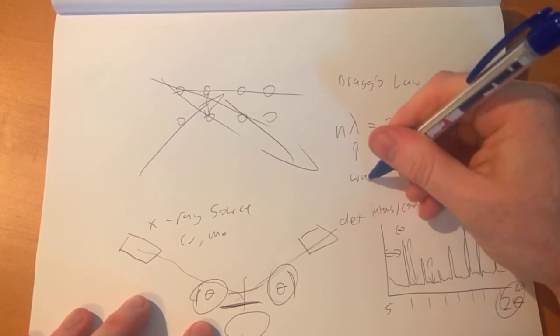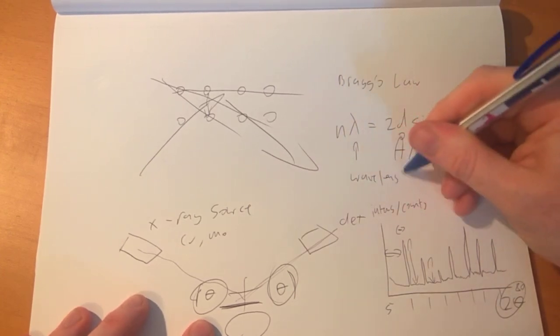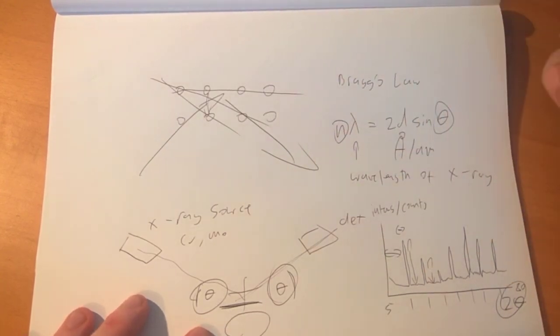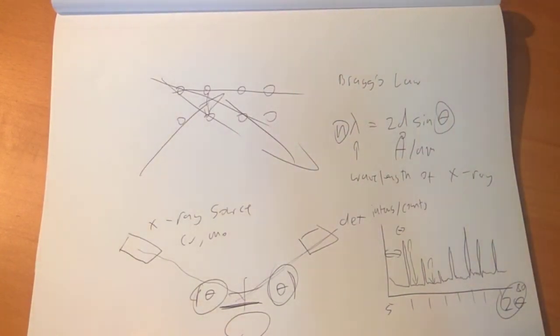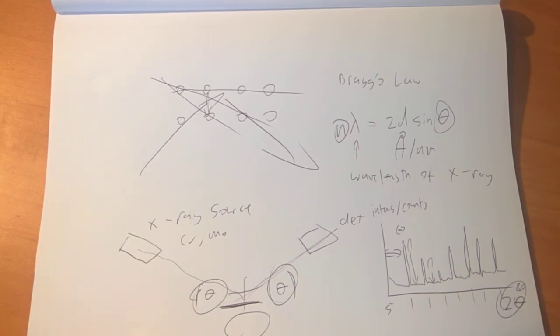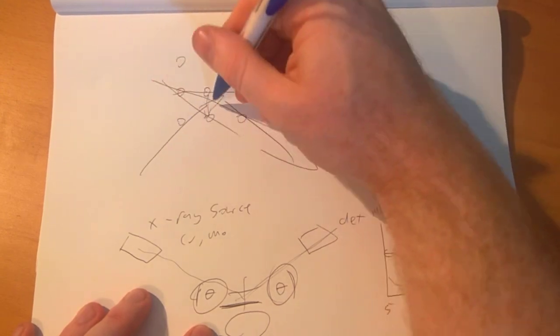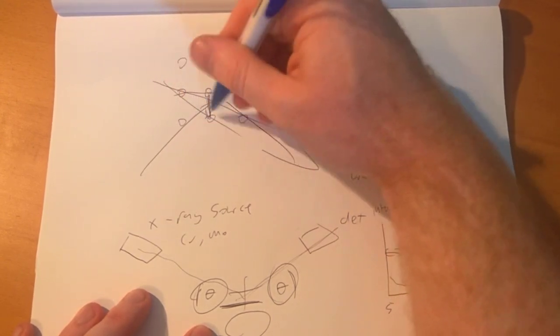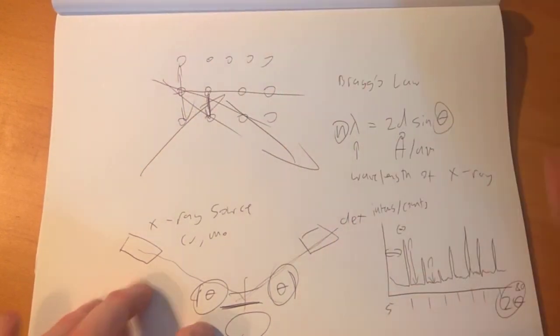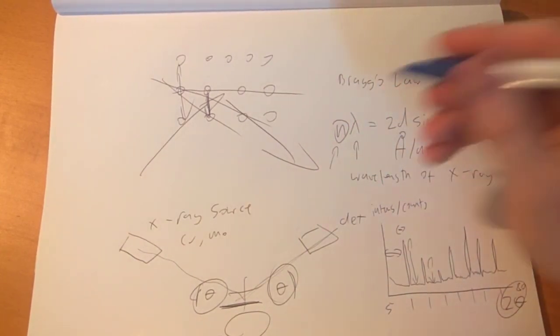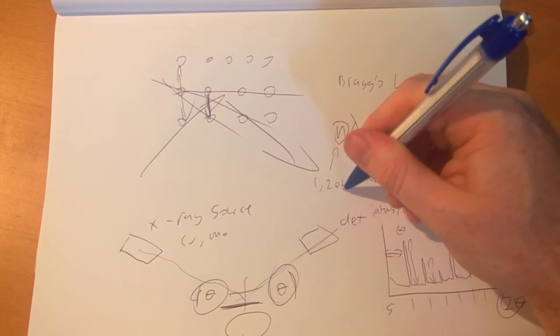And N is a number. Because often you will see multiples of a very similar reflection in your spectrum. Because if I add another row to this, you can end up with a reflection between two rows, one row and a reflection between two rows. So that's where the N comes in. This is just a number, which is like a whole number, so for instance one, two, et cetera.